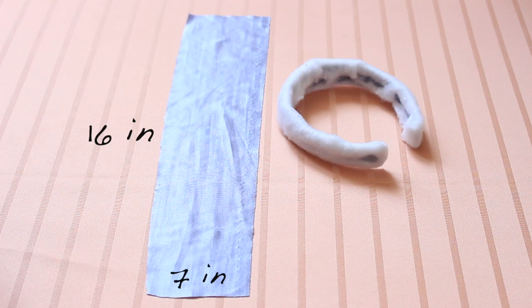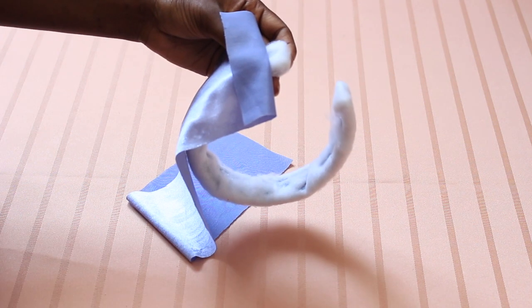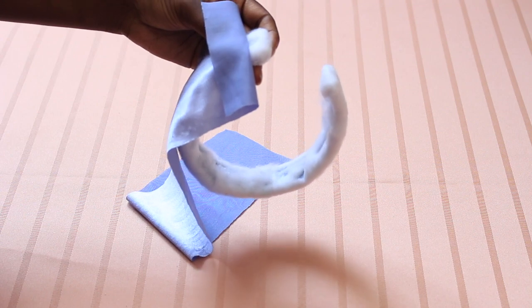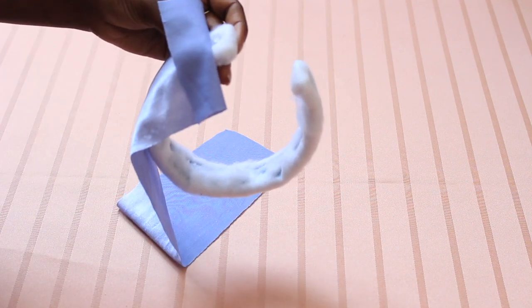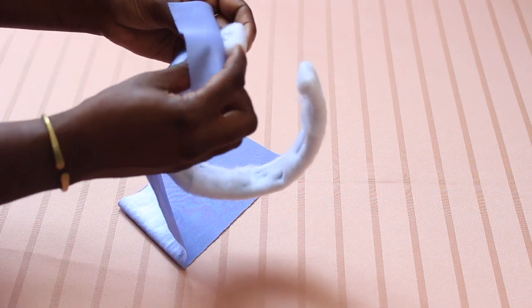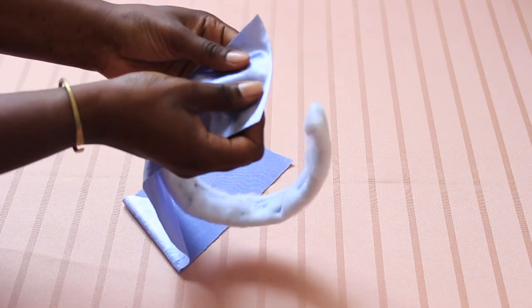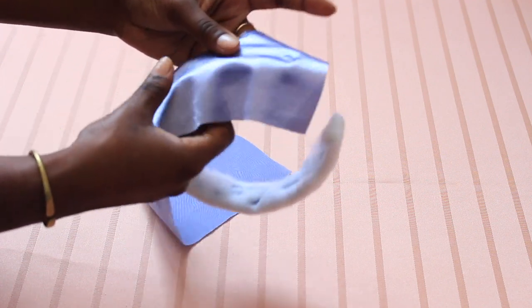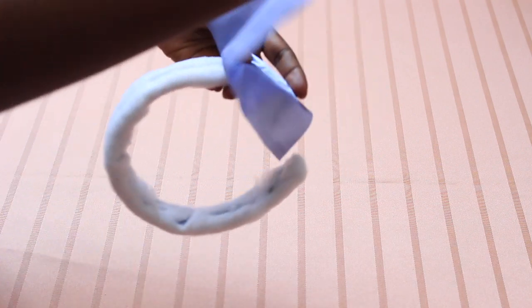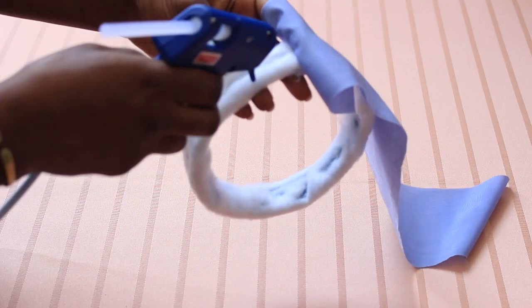Next, we're going to grab a 7 by 16 inch strip of fabric that we're going to glue all around our headband. You can choose any type of fabric that you like. I decided to go with this really pretty lilac satin. As you can see here, I'm just starting again, same process as adding on the batting, just putting a dot of glue at the end of the headband and then continuing to glue the fabric on.